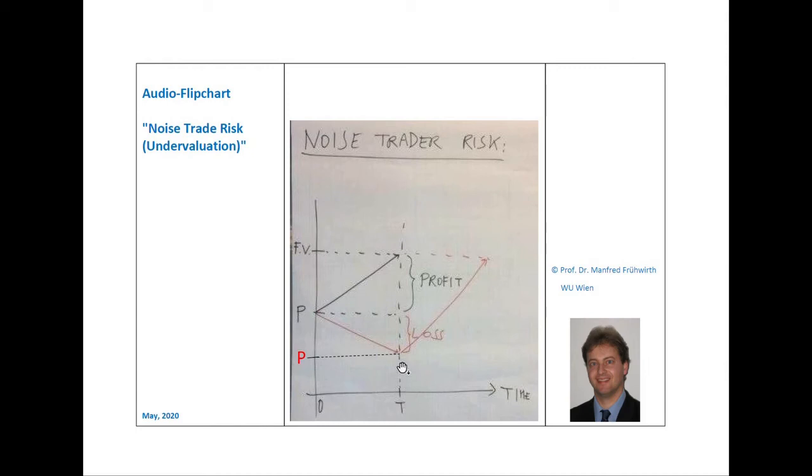In that case, the arbitrage share has to sell the stock at the price, here, the red P, that is lower than the price at which he has originally bought, the black P. This, of course, creates a loss for him in the amount of the old wrong price minus the new even wronger price. This loss is shown on the flip chart.